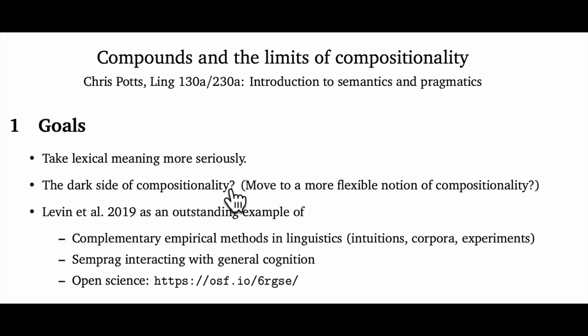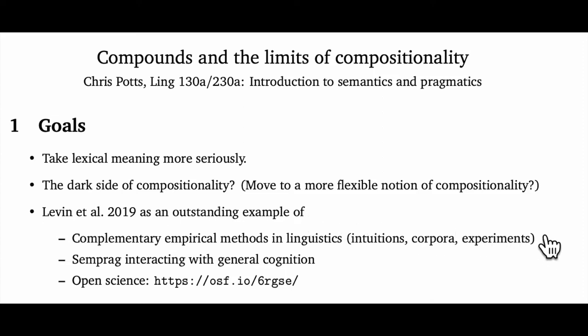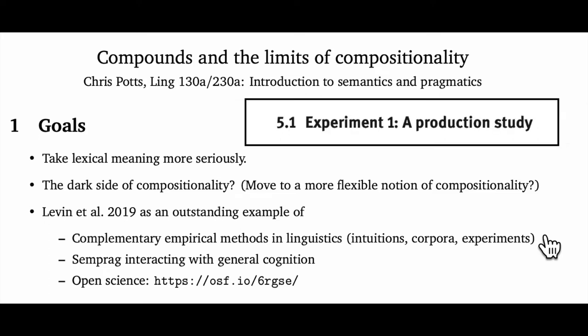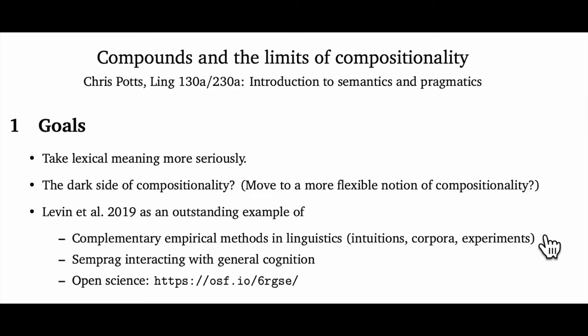Even more important to me is this second big goal: we want to ask whether adhering to the compositionality principle might have a dark side. Is this principle leading us astray? Should we be adjusting how it's stated and what it means to us? And finally, this article is innovative in its experimental methods. Levine, Glass, and Jurafsky bring together corpus studies, production experiments, and interpretation experiments — mixing observational methods with careful laboratory manipulation in a way that yields a really rich picture of how noun compounds in English work.